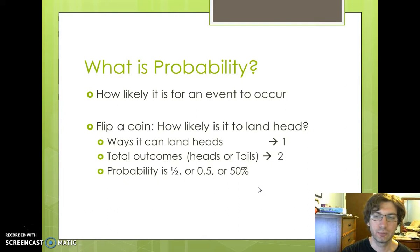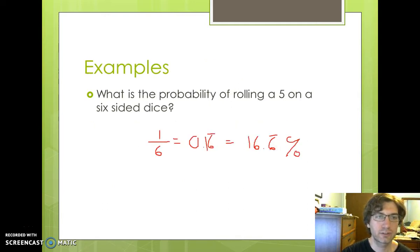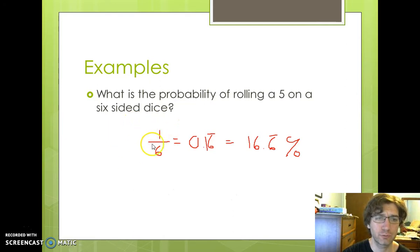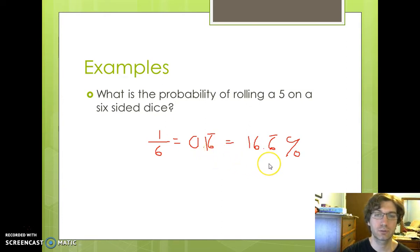It does not matter which way you write those — whichever one you're more comfortable with. If you like fractions, go with fractions. If you like decimals, go with decimals. If you like percents, go with percents. Another example would be rolling a 5 on a 6-sided die. There's only 1 way to roll a 5, and there are 6 possible outcomes: 1, 2, 3, 4, 5, or 6. So your probability is 1/6, which is the same as 0.16 repeating, or 16.6 repeating percent.